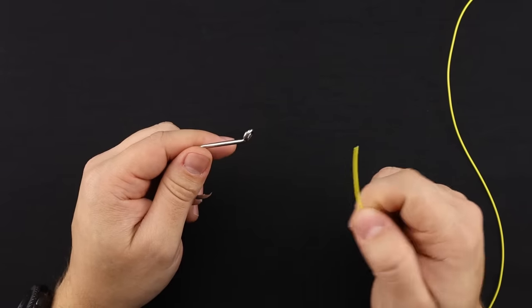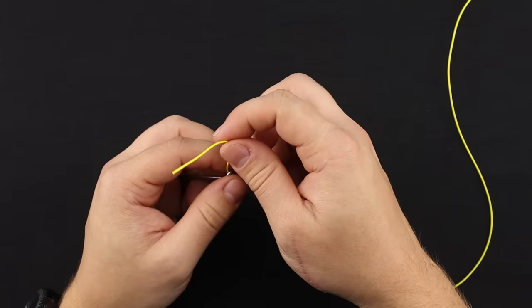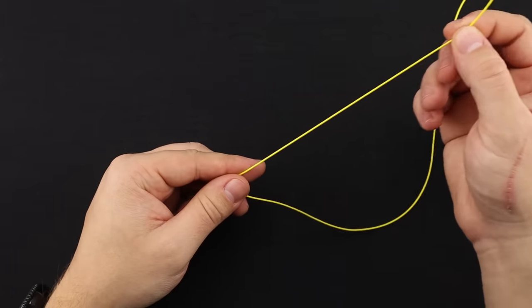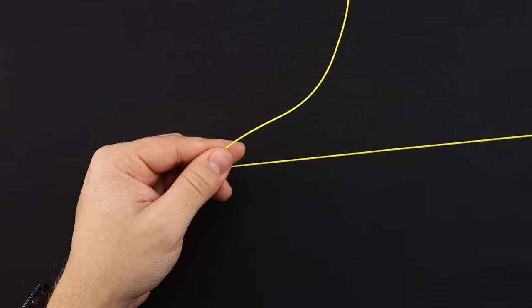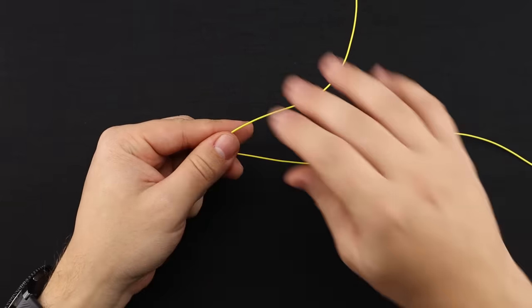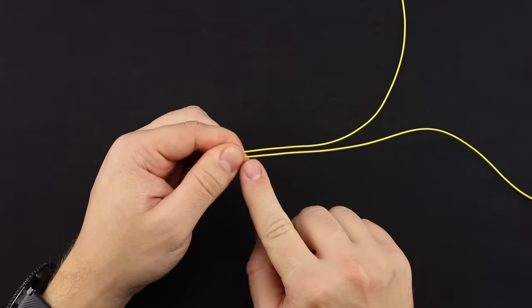So with your tag end, you're going to place this through the eye of the hook and then give yourselves a good amount of tag end here to work with. I like to do about 8 to 10 inches or so. And then with your main line, go ahead and just run that to the right. Now I like to just pinch these two lines close to each other just like so.